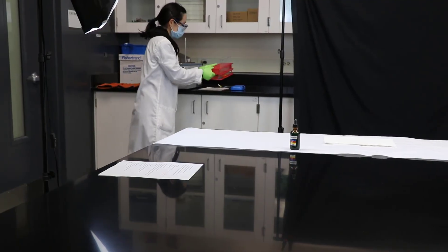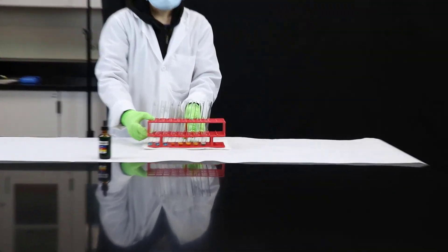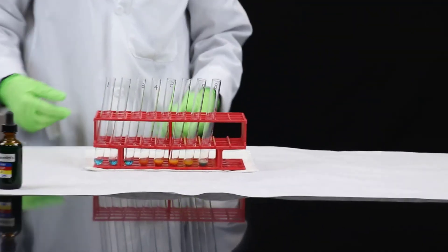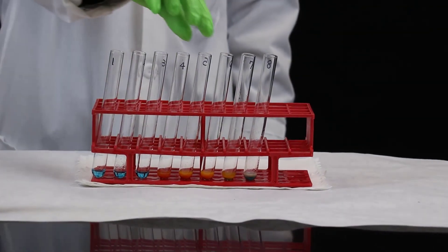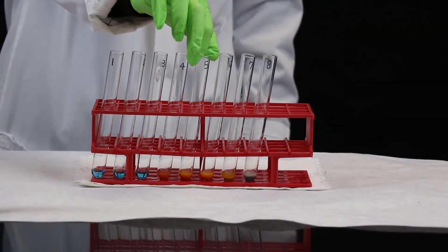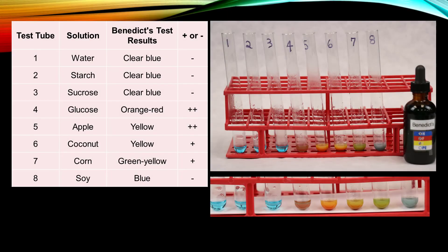Record your results. Clear blue indicates the absence of reducing sugars, or negative. Green-yellow with precipitate indicates trace to low levels of reducing sugars, noted as plus. Orange-red with precipitate indicates moderate to high levels of reducing sugars, noted as plus plus.